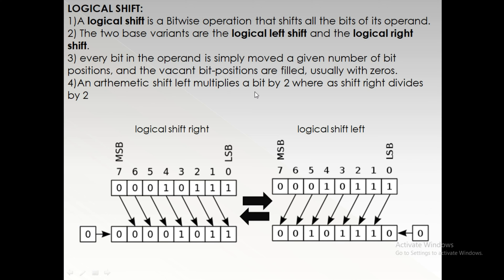An arithmetic shift left multiplies a number by 2, while a shift right divides a number by 2. For example, if we consider the second bit of a register with value 2, when shifted right it is divided by 2 and becomes 1, which is the first bit value. For shift left, the first bit value of 1 is multiplied by 2 to become 2, which is the second bit position.